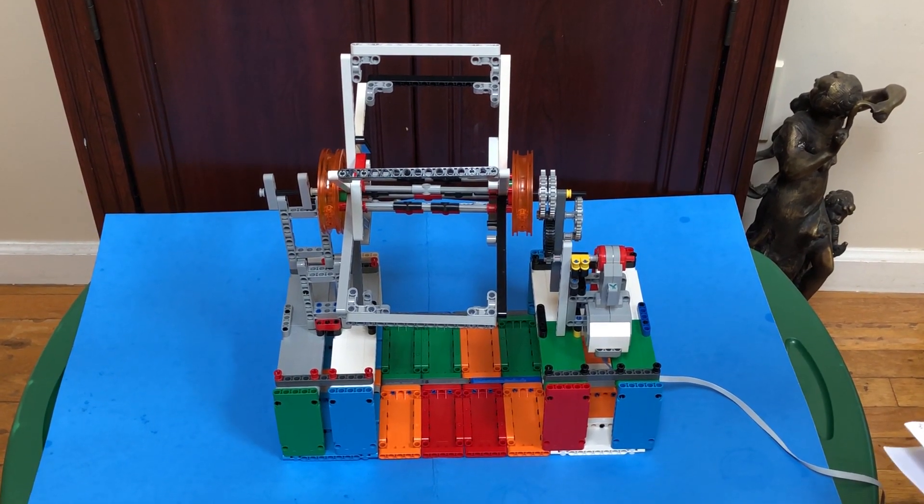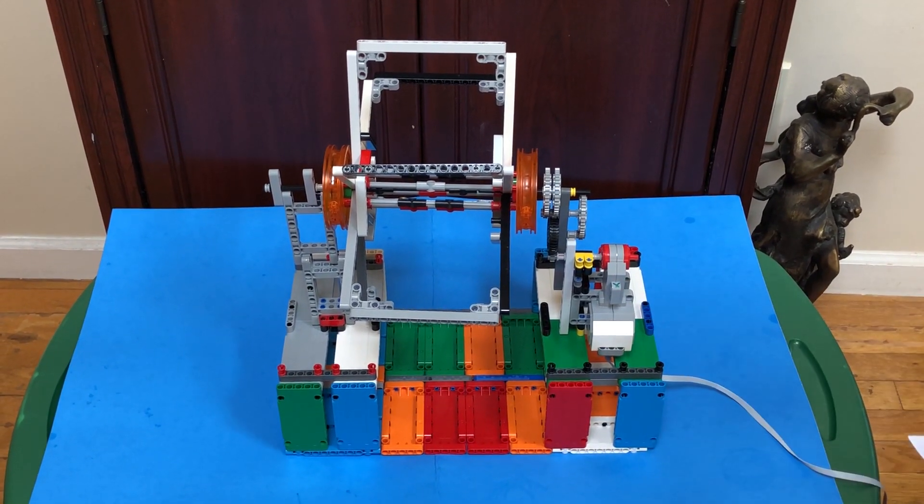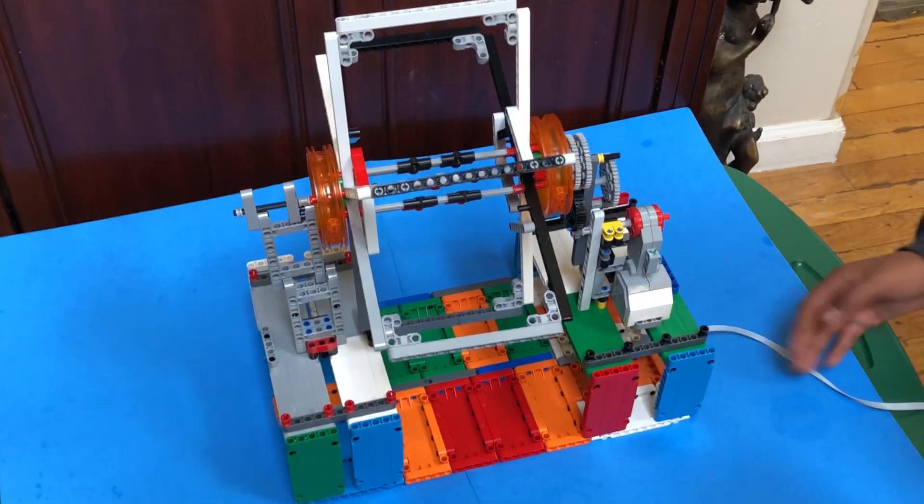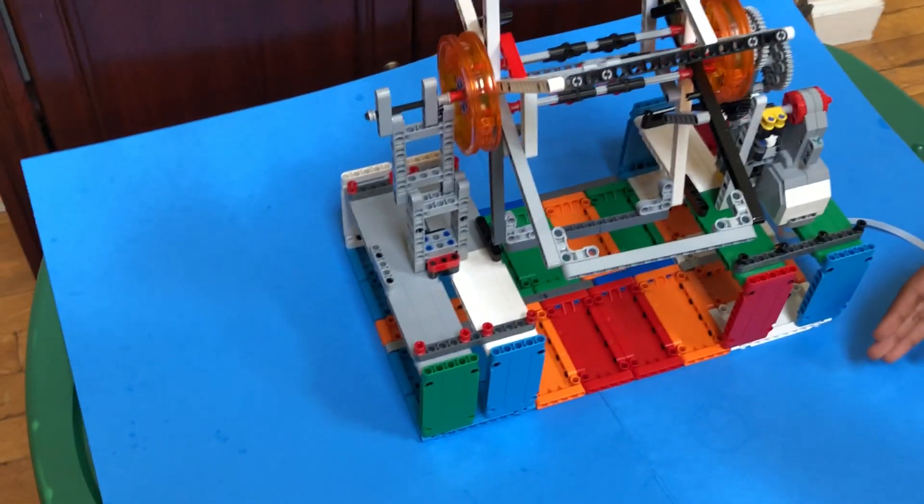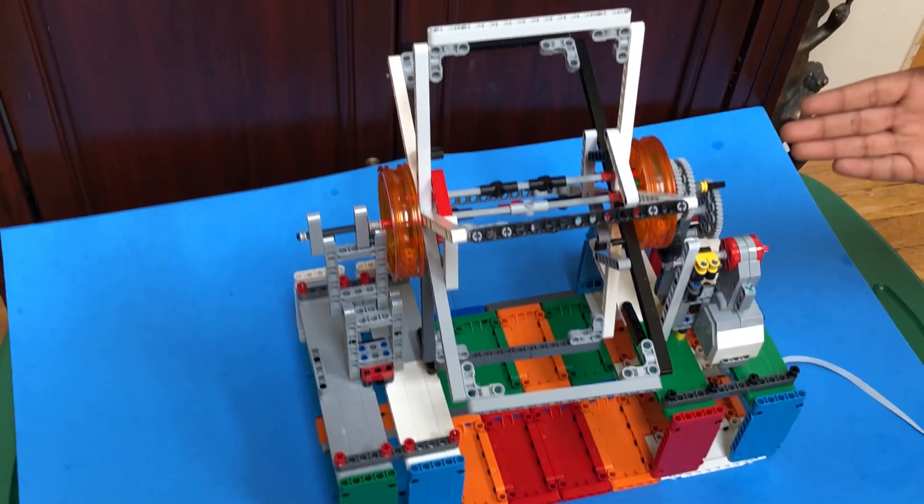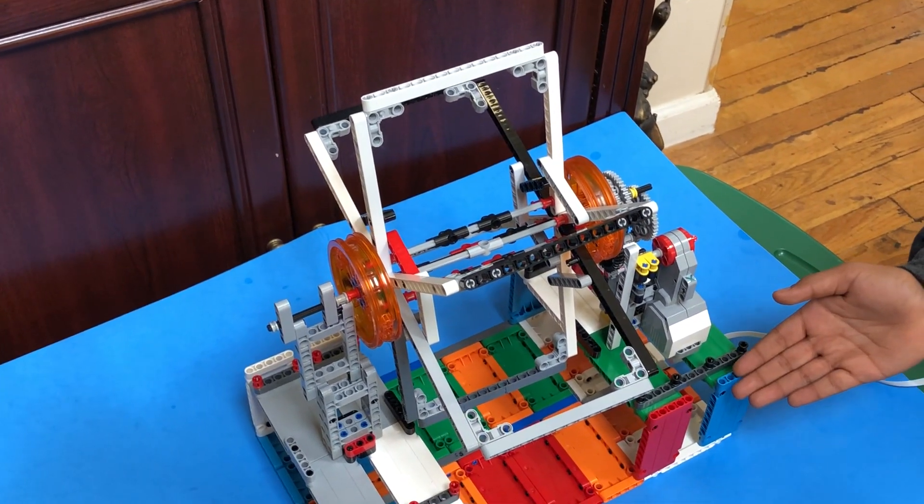You can build a clinostat using Lego parts. It essentially looks like a big ferris wheel, so it's easy to picture. To build the base, you can connect a lot of flat panels. Then you can mount the actual clinostat on top of the base, also using panel pieces.